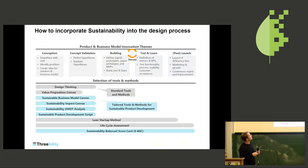Back then I was looking at the typical product innovation process and we developed a range of tailored methods for sustainable product and business model innovation. Today I want to speak about two in particular: the sustainable business model canvas and the sustainability impact canvas.